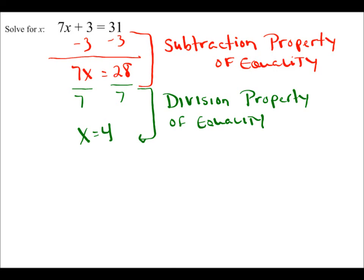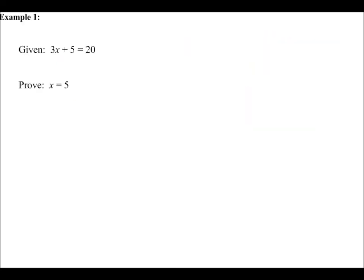Now let's take this one step further. In the next example, we're given 3x plus 5 equals 20 and asked to prove x equals 5. This is where we start, and that is where we want to end. We'll solve the equation step by step, show all work, and write the name of the property used at each step. In a proof, we always start by writing down the original given statement.